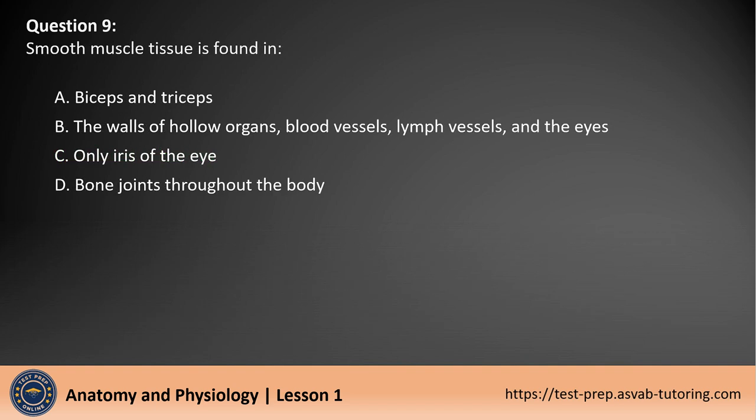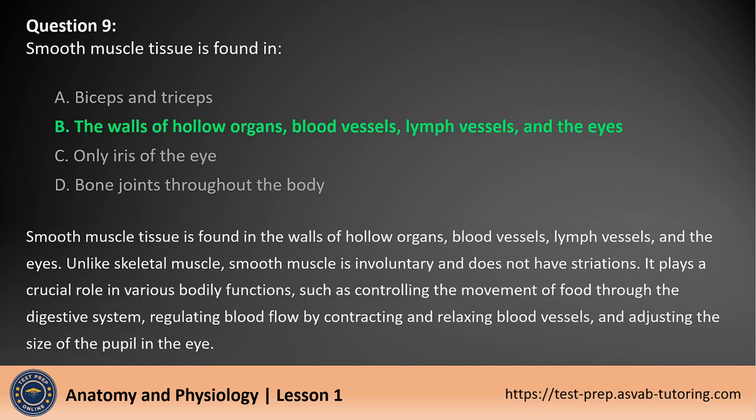Question 9. Smooth muscle tissue is found in: A. Biceps and triceps. B. The walls of hollow organs, blood vessels, lymph vessels, and the eyes. C. Only the iris of the eye. D. Bone joints throughout the body. The answer is B. Smooth muscle tissue is found in the walls of hollow organs, blood vessels, lymph vessels, and the eyes. Unlike skeletal muscle, smooth muscle is involuntary and does not have striations. It plays a crucial role in controlling the movement of food through the digestive system, regulating blood flow, and adjusting the size of the pupil in the eye.